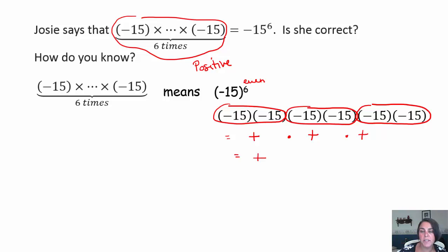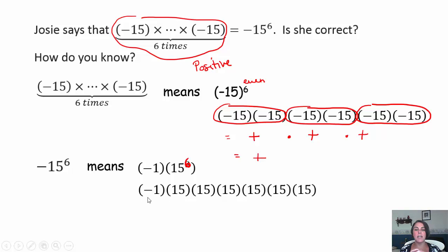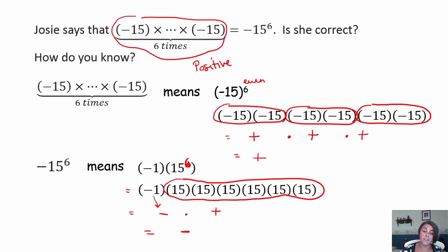So if these two expressions are going to be the same thing, the second expression should also be a positive answer. The second expression — negative times 15 to the 6th — means negative 1 times 15 to the 6th, which means negative 1 times 15 times 15 times 15 times 15 times 15 times 15. When I multiply all those positive 15s together, I get a positive answer, but when I multiply by that trailing factor of negative 1, a negative times a positive is a negative. So this expression will have a negative answer.